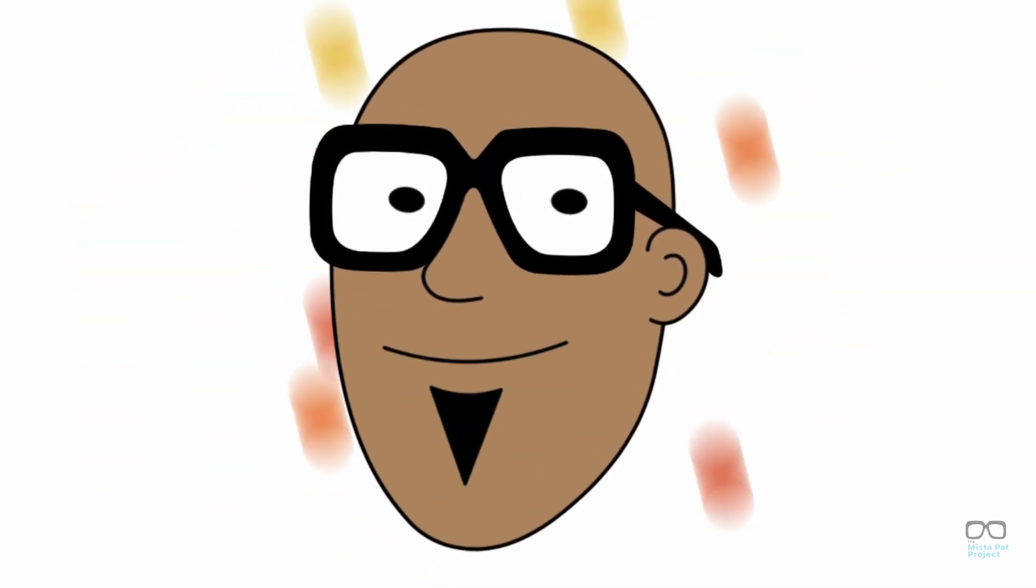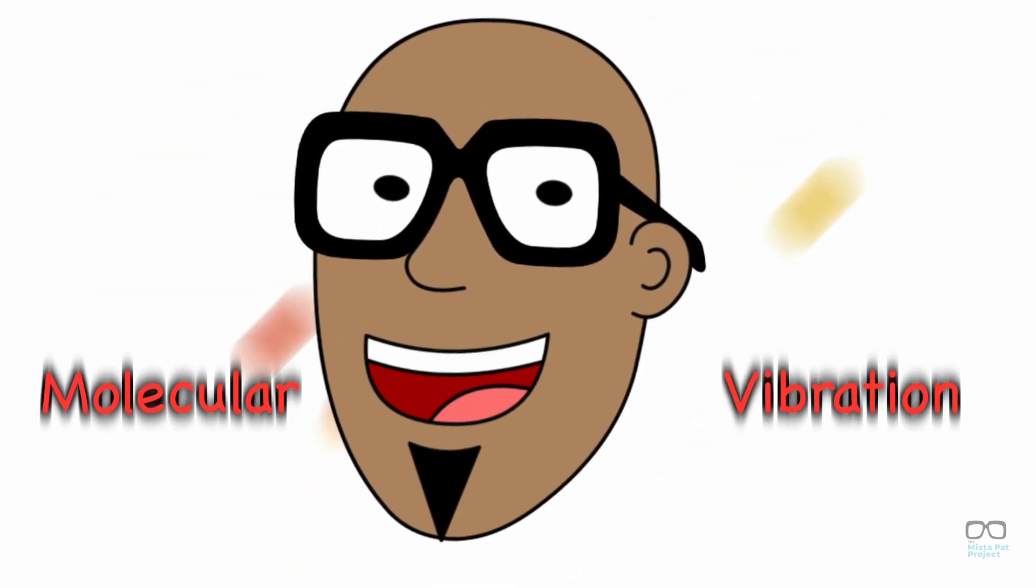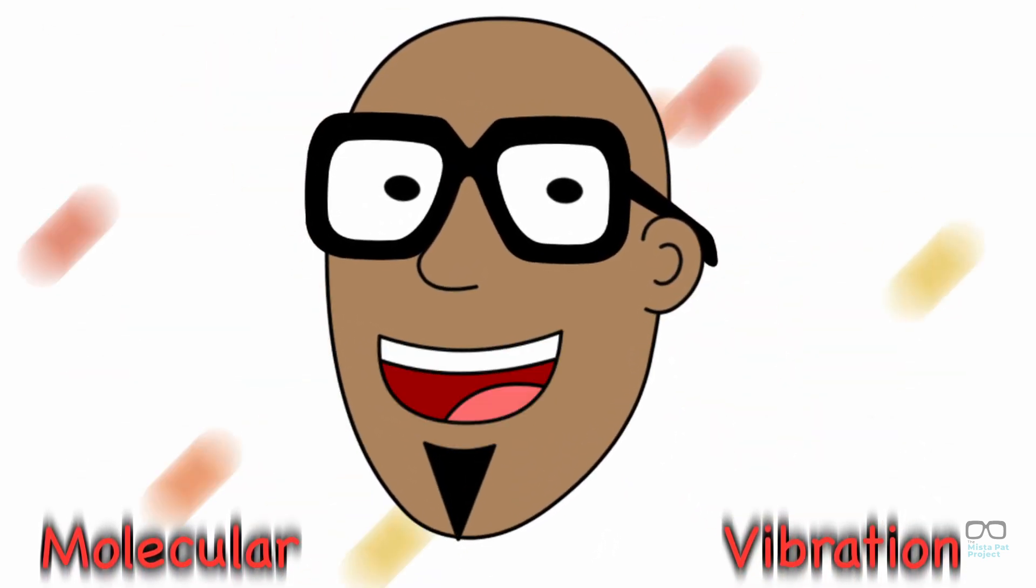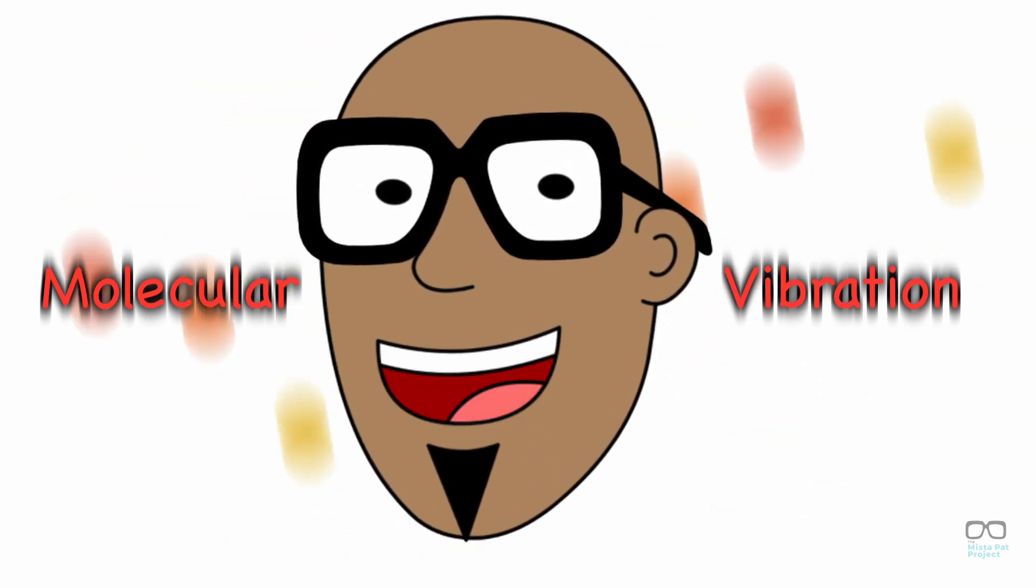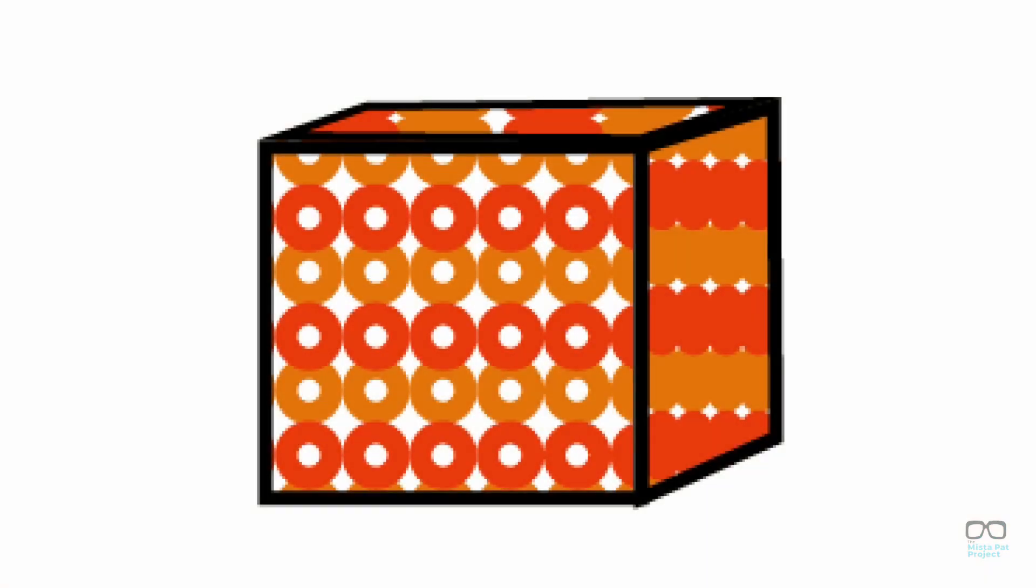Atoms also vibrate based on the other atoms around them. This is called molecular vibration and it can be a bit different depending on the forms atoms take. Atoms found in solid objects like this block are tightly packed together and are unable to move around each other. That's why we can't just walk through something like a wall.